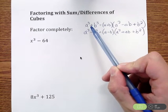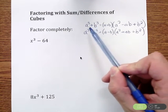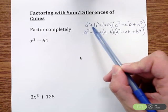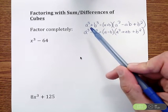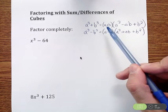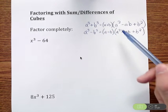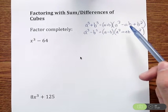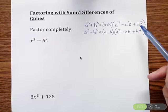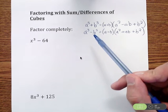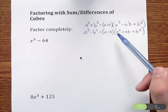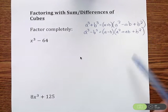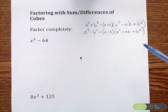If you have a sum of cubes — remember sum is addition — you're going to have a plus b, and then a squared minus ab plus b squared. When you're doing a difference of cubes, that's subtraction, you're going to have a minus b, and then a squared plus ab plus b squared. If you need to pause and write down these formulas, go ahead and do that.